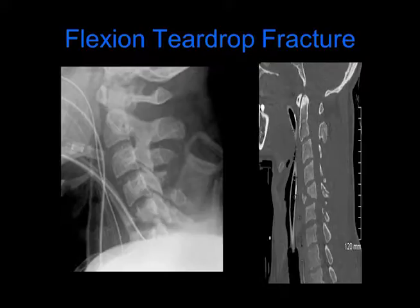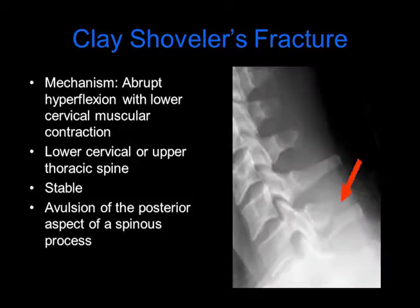On the right is the corresponding CT scan image. A clay shoveler's fracture is a fracture of the posterior aspect of a spinous process, most commonly the C7 or T1 spinous process. The mechanism is abrupt hyperflexion with lower cervical muscular contraction. This is considered a stable injury.